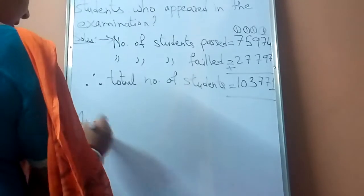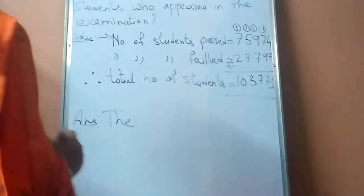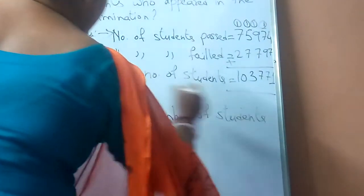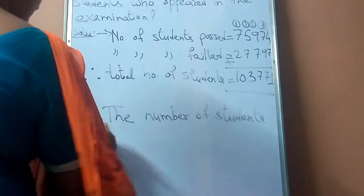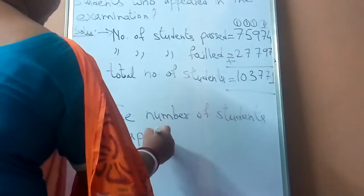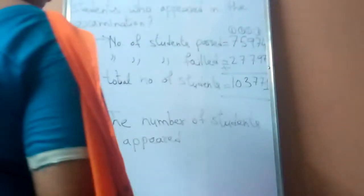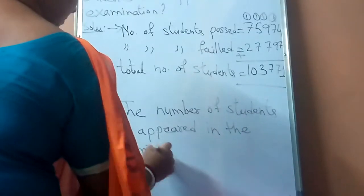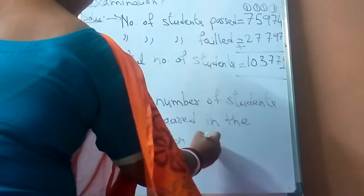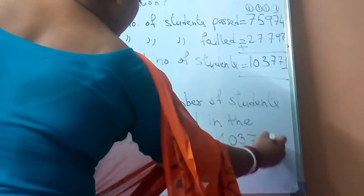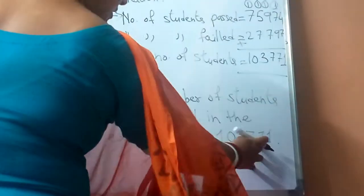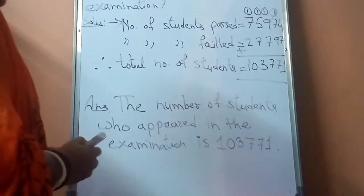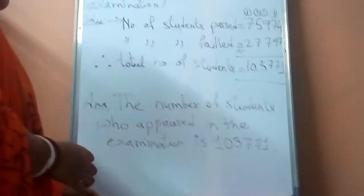At the last, we will write the answer as: the number of students who appeared in the examination is — if you read it, it will be ones, tens, hundred, thousand, ten thousand, lakh — that is one lakh, three thousand, seven hundred seventy one. So this is the question and the solution or the statement for this type of question.